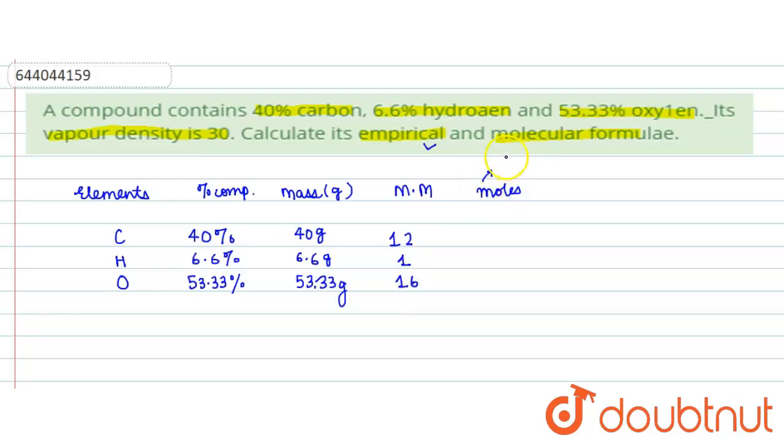That is 40 upon 12, which will come out to be 3.3. For hydrogen it will be 6.6, and for oxygen it will be again 3.3. Now we need to know their simplest ratio.